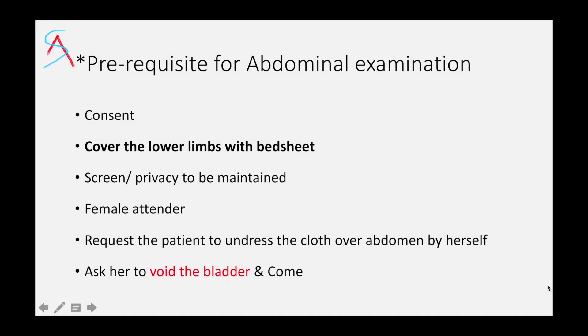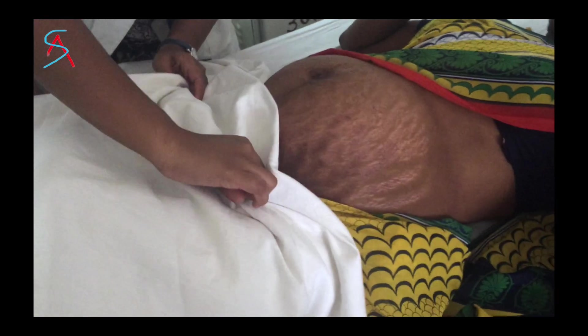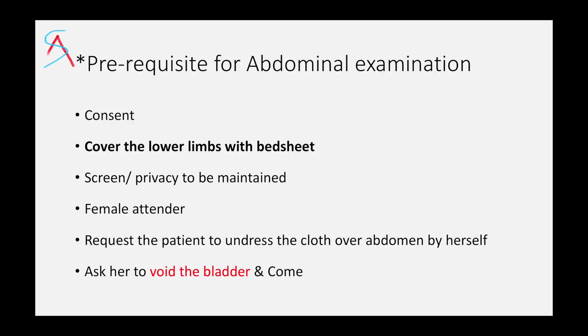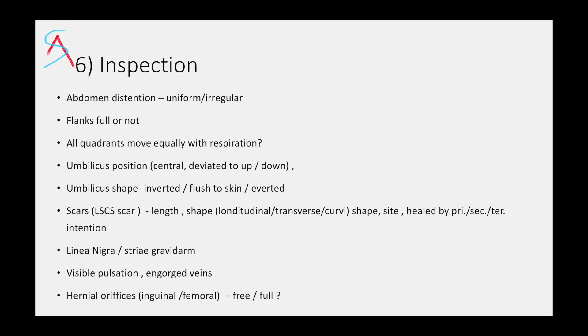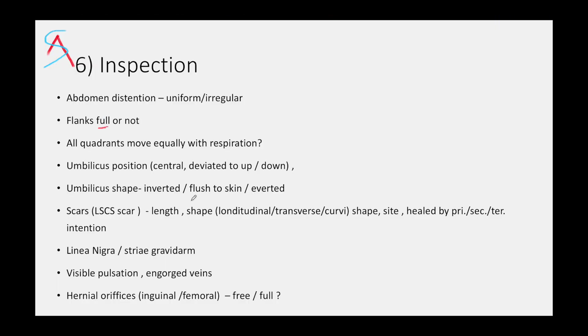Then in abdominal examination. Prior to abdominal examination, it is important to take consent. Cover the lower limbs with a bed sheet. Use a screen and maintain privacy. Always try to have female attendants with you if the examiner is male. Ask the patient to void the bladder before examination, because a full bladder may interfere with the pelvic grip and may also increase fundal height. In inspection, look whether the abdomen is uniformly or irregularly distended.